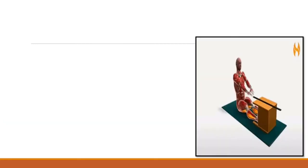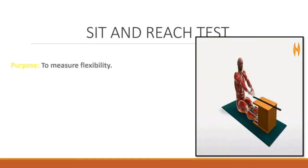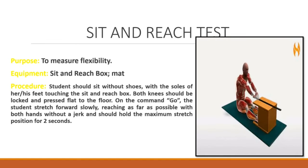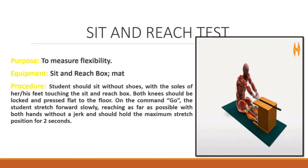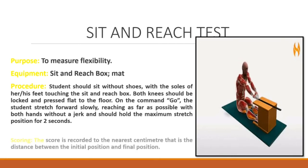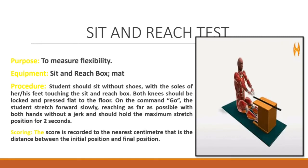Sit and Reach Test. Purpose: To measure flexibility. Equipment: Sit and reach box, mat. Procedure: Student should sit without shoes, with the soles of feet touching the sit and reach box. Both knees should be locked and pressed flat to the floor. On the command go, the student stretches forward slowly, reaching as far as possible with both hands without a jerk, and should hold the maximum stretch position for 2 seconds. Scoring: The score is recorded to the nearest cm, i.e., the distance between the initial position and final position.